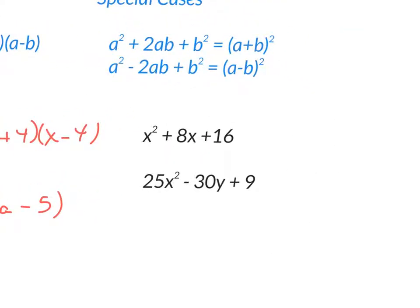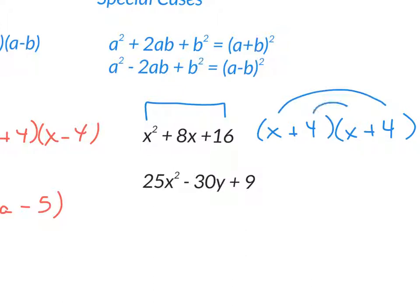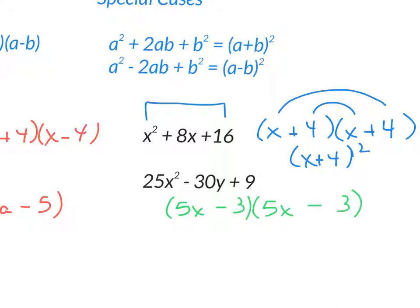Second special case: a perfect square trinomial, where the first and last terms are perfect squares. You'll get two identical parentheses. For x² + 8x + 16, try (x + 4)² — FOIL confirms it works. You can write it as (x + 4)². For 25x² − 30x + 9, since first and last are perfect squares, try (5x − 3)²: square the first gives 25x², multiply and double gives −30x, square the last gives 9. It checks out perfectly.